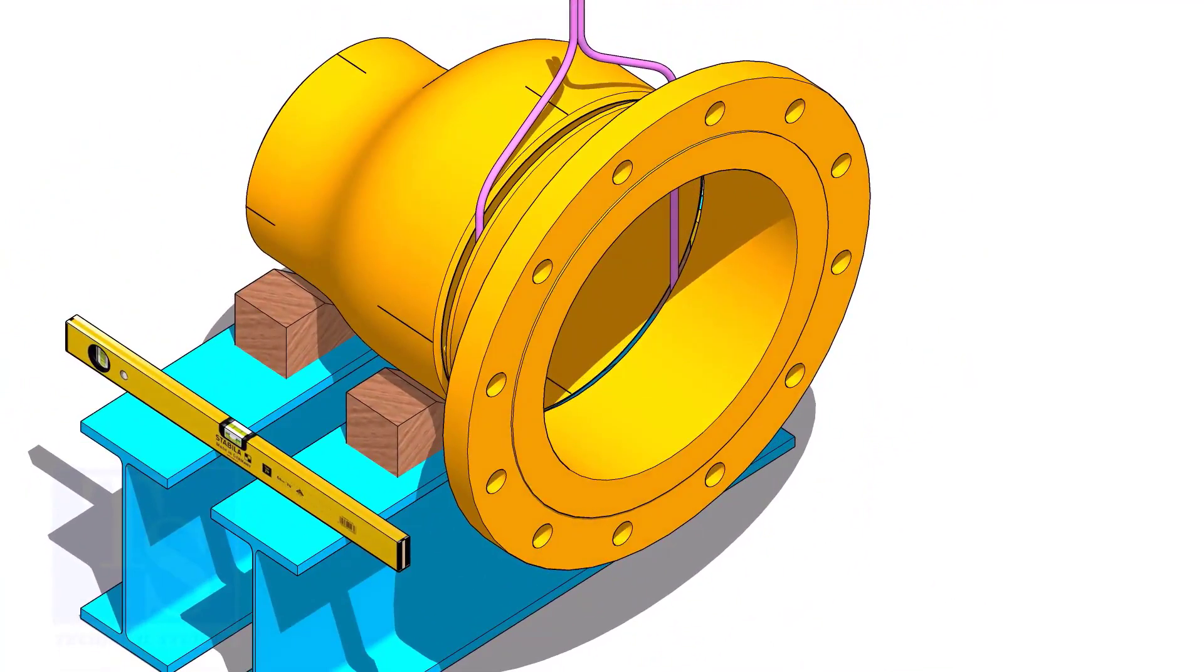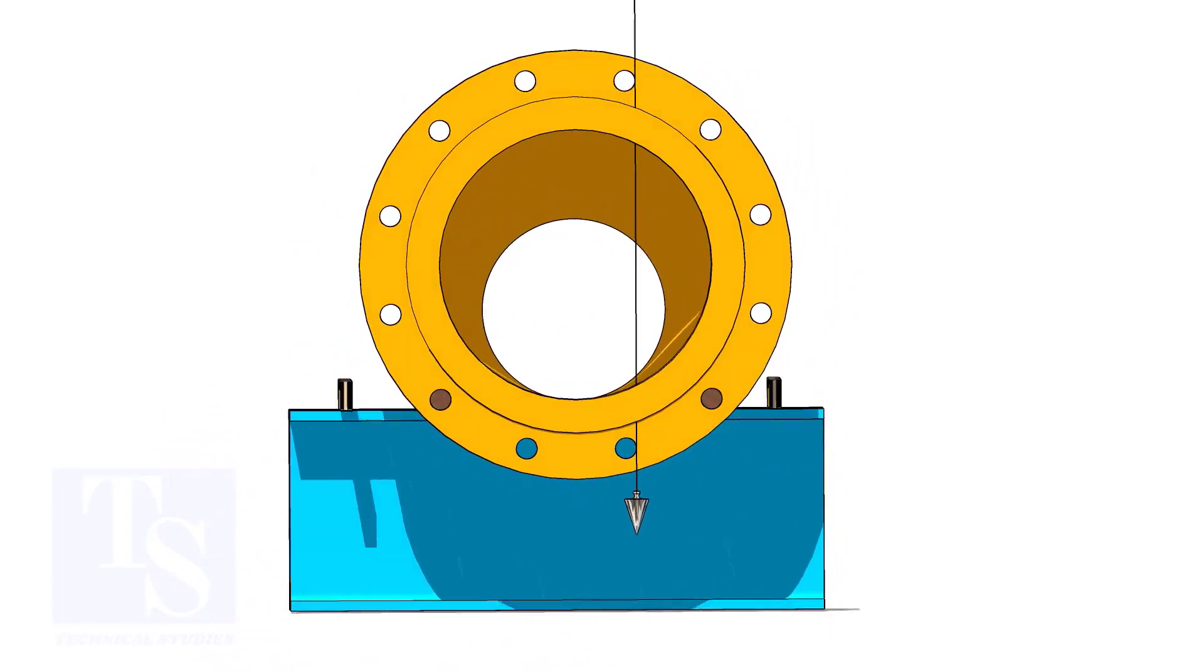Put flange in the gap rod. Arrange proper supports below the flange. Plumb the flange through the holes as shown.